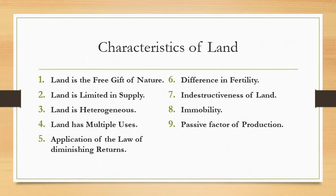Number eight: immobility. Land is an immobile factor of production; it cannot be shifted from one place to another. Some economists, however, describe land as a mobile factor on the argument that it can be put to several uses.